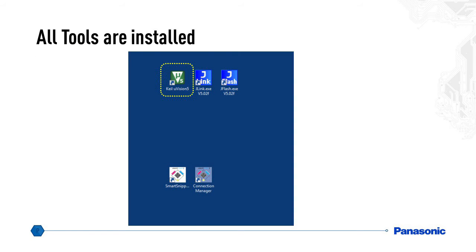Once you're done installing all the tools, you should have five new icons on your desktop: one for the Keil, two for the J-Link, one for Smart Snippets, and one for the Connection Manager. The next step is to set up the tools.